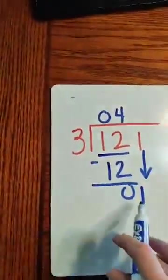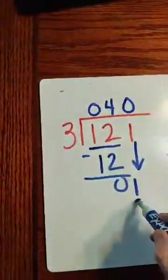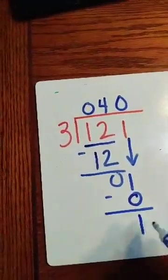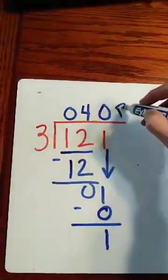How many times does 3 go into 1? You got it, 0 times. 0 times 3, 0, subtract, 1. What do I do with that because I'm out of numbers? Remainder 1.